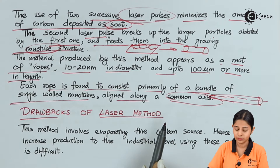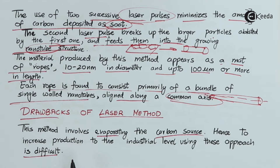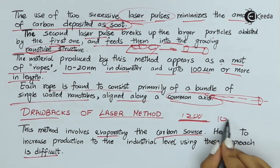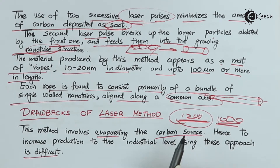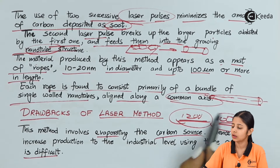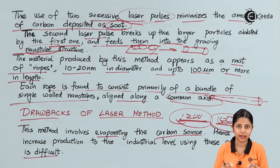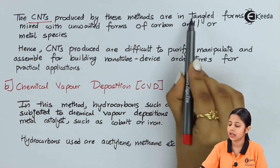The drawbacks of the laser method: this method involves evaporating the carbon source, hence increasing production to the industrial level using this approach is difficult. The process requires heating to 1200 degrees Celsius in flowing argon, then cooling down, then reheating to 1000 degrees Celsius, and cooling again — these two steps cannot be merged. This makes the process difficult for a large number of carbons at an industrial level. Additionally, the carbon nanotubes produced by this method are in tangled form.